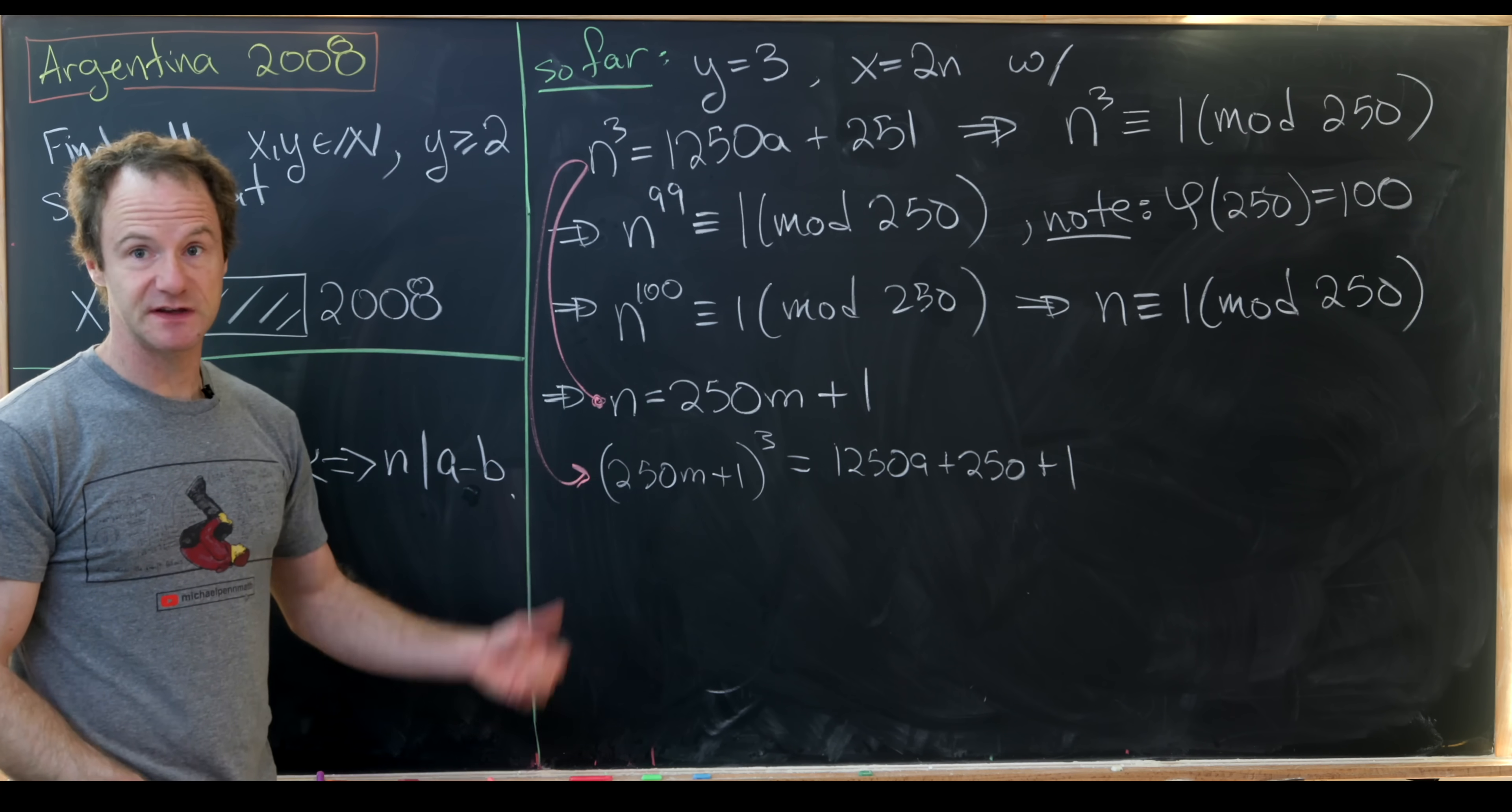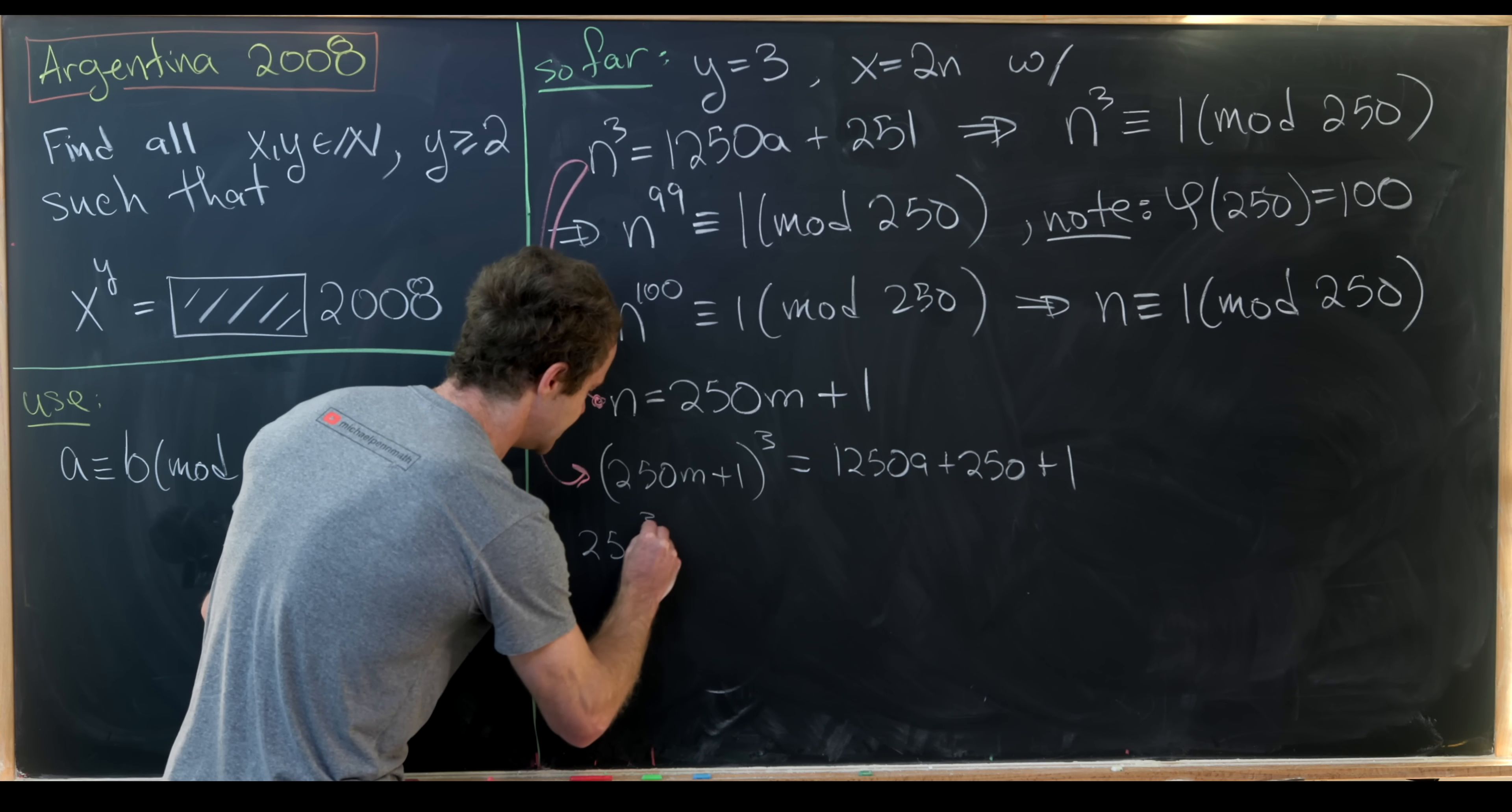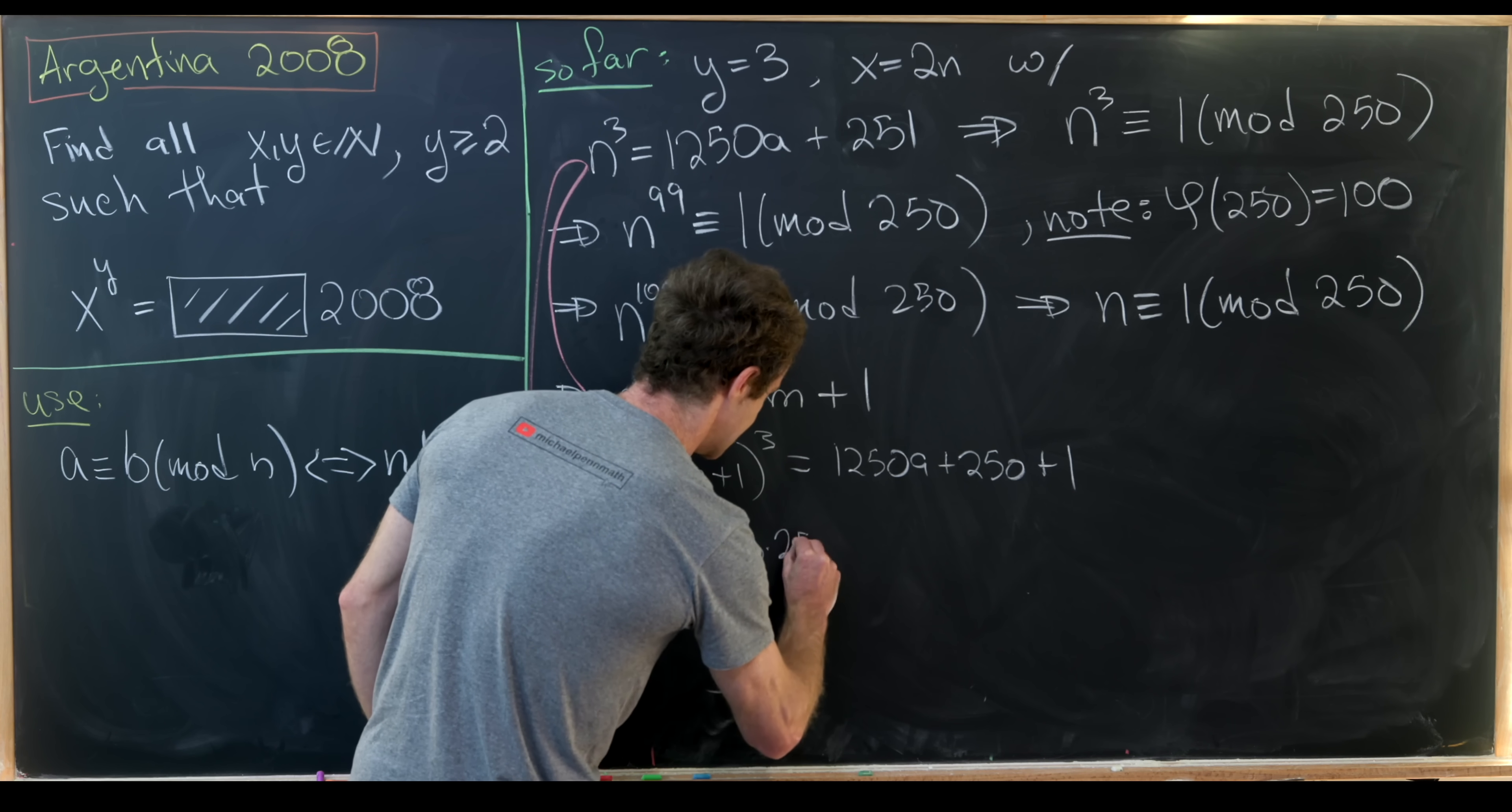And now let's cube this using the binomial formula. That'll give us 250 cubed times m cubed plus 3 times 250 squared times m squared plus 3 times 250m plus 1.